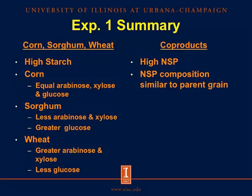In summary of Experiment 1: corn, sorghum, and wheat were high in starch, whereas co-products were high in non-starch polysaccharides. The NSP composition of co-products was similar to their parent grains. For corn and corn co-products, we saw equal arabinose, xylose, and glucose. In sorghum and sorghum co-products, there was less arabinose and xylose and greater glucose. And in wheat and wheat co-products, there was greater arabinose and xylose and less glucose.